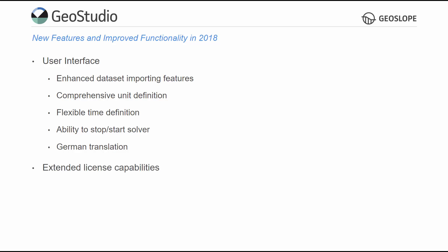Purchasing a full-feature license for any product will now provide access to a basic license for all other GeoStudio products. This licensing change provides greater product integration despite being limited in functionality. For example, the owner of a full SlopeW license will now be able to complete a steady-state water transfer analysis, using SeepW to define the spatial variability in pore water pressures.